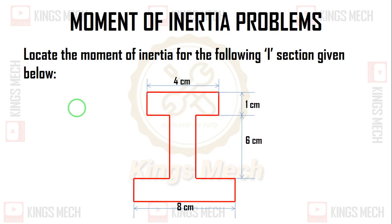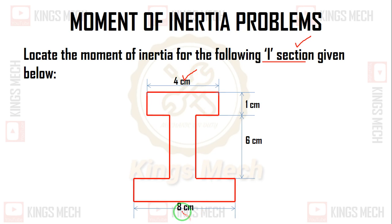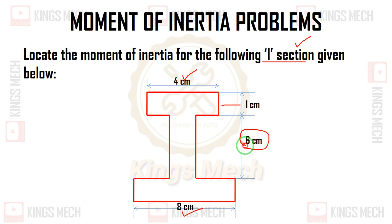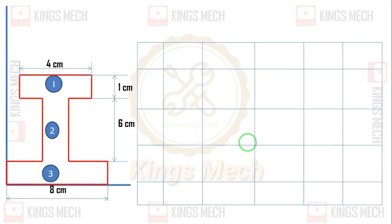So we will go to the problem. It's a very simple problem. The problem involves an I-section. The given I-section has a top flange of 4 centimeters, bottom flange of 8 centimeters, middle web of 1 centimeter, and the height is 6 centimeters. First and foremost step is to find the centroid.